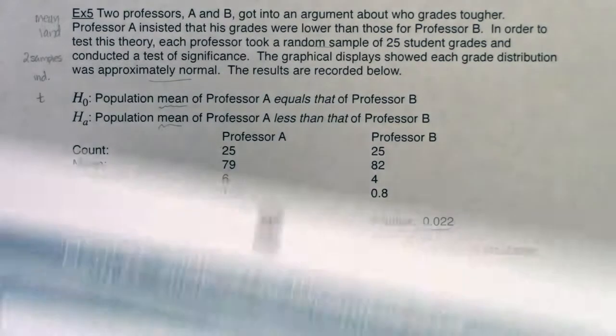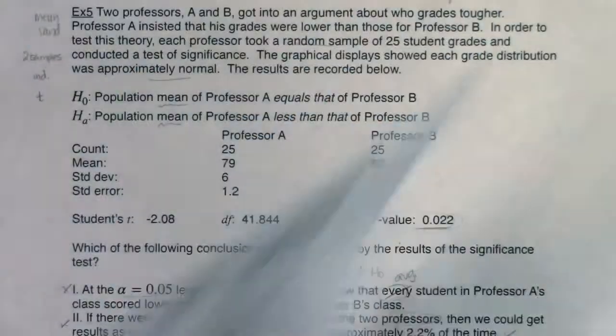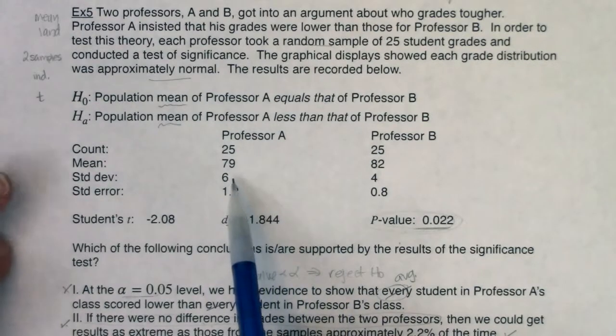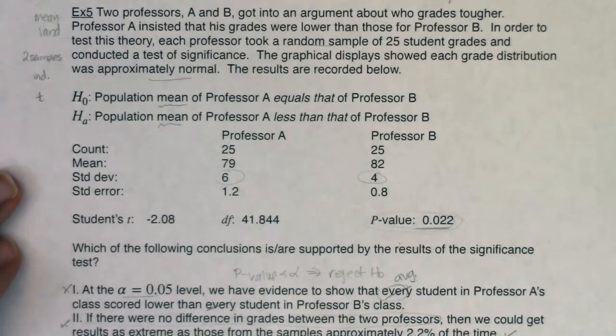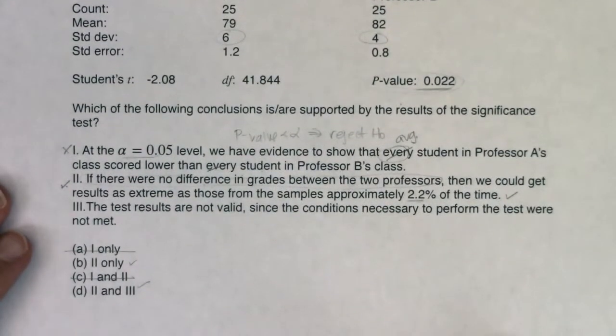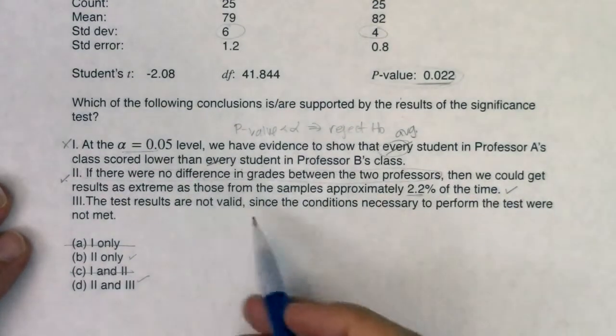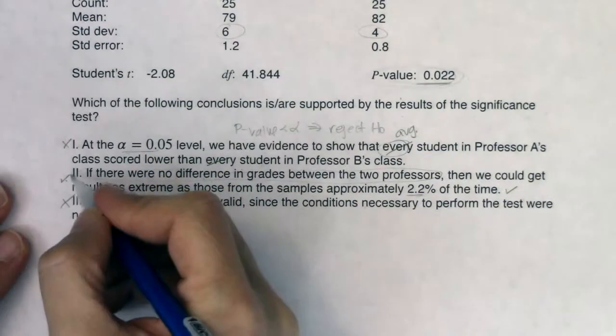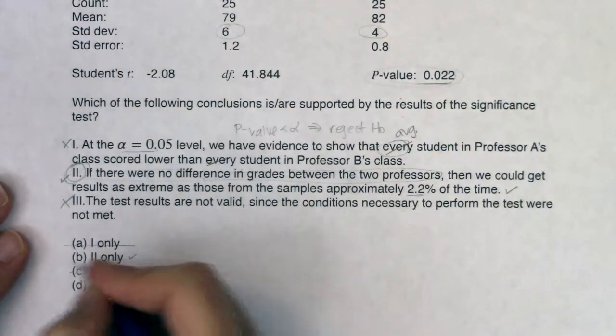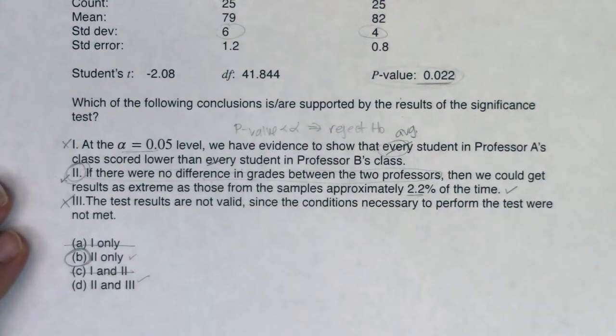Okay do I know my two sample standard deviations? Sure do. Right here they are boom boom. All right so all of that information was given to me so my assumptions were definitely met. So this is they are not valid since the conditions are met. No JK they are totally valid. So this is the only true sentence. So B is going to be my answer.